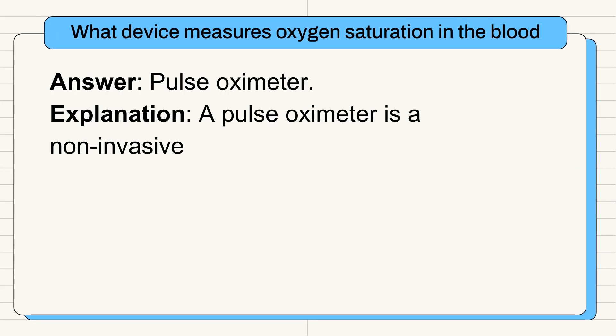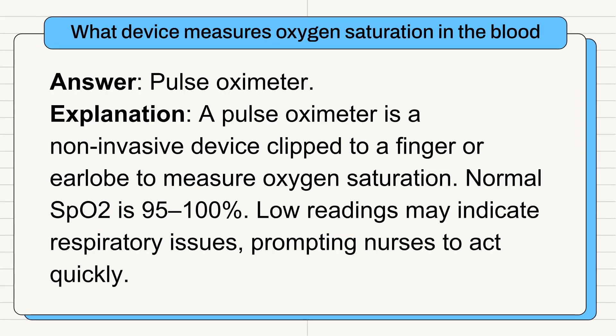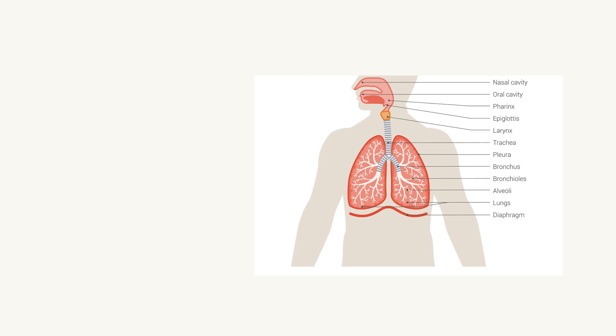Question 2: What device measures oxygen saturation in the blood? Answer: Pulse oximeter. A pulse oximeter is a non-invasive device clipped to a finger or earlobe to measure oxygen saturation. Normal SpO2 is 95 to 100%. Low readings may indicate respiratory issues, prompting nurses to act quickly.